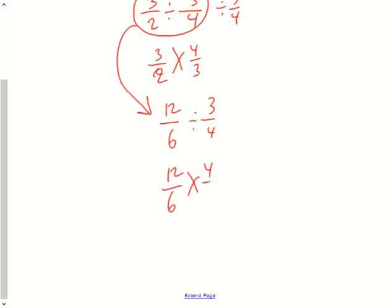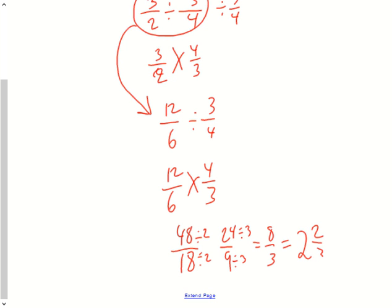Keep the first fraction. Change the multiplication by the reciprocal. If you don't cross-reduce, you get 48/18, because 12 times 4 is 48, 6 times 3 is 18. And now you've got to go and reduce this down to lowest terms. That's 24/9. You can divide by 3 again. 8/3 is your answer, which of course is 2 and 2/3 when you change that improper fraction to a mixed number.